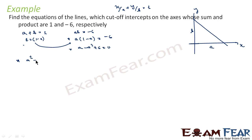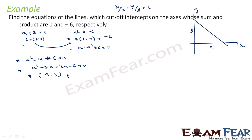Rearranging, A squared minus A minus 6 equals 0. We factor this as A squared minus 3A plus 2A minus 6 equals 0, giving (A minus 3)(A plus 2) equals 0. So A is equal to plus 3 or minus 2.